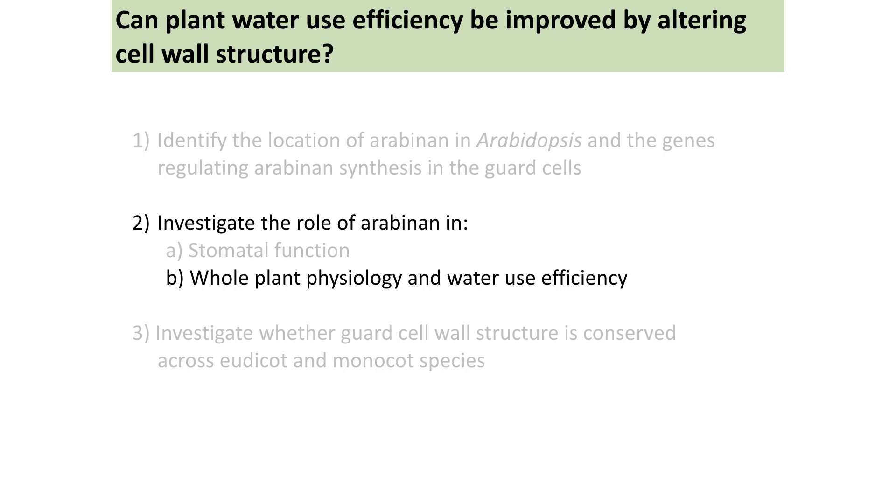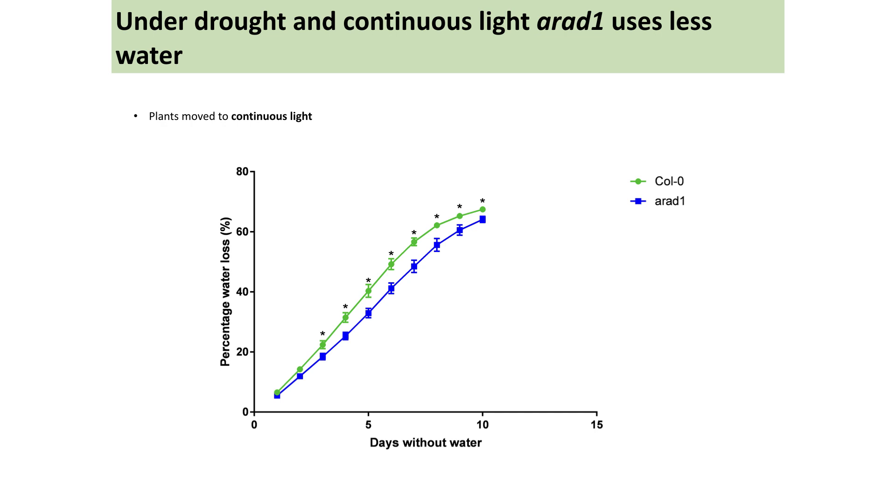We also examined implications for whole-plant physiology and water use efficiency in pilot studies. Plants grown in normal conditions were moved to a stressful environment with continuous light and drought, and pots were weighed daily to track water use. The arad1 mutant loses less water every day compared to the control, likely because the stomata are not opening as wide, so less water can move out of the plant.